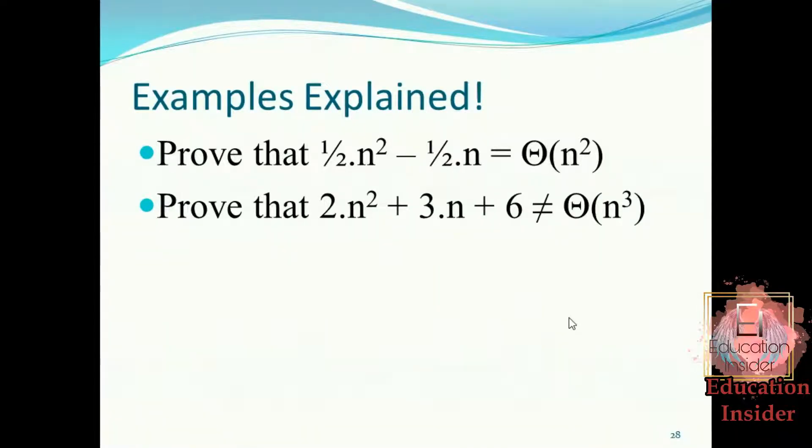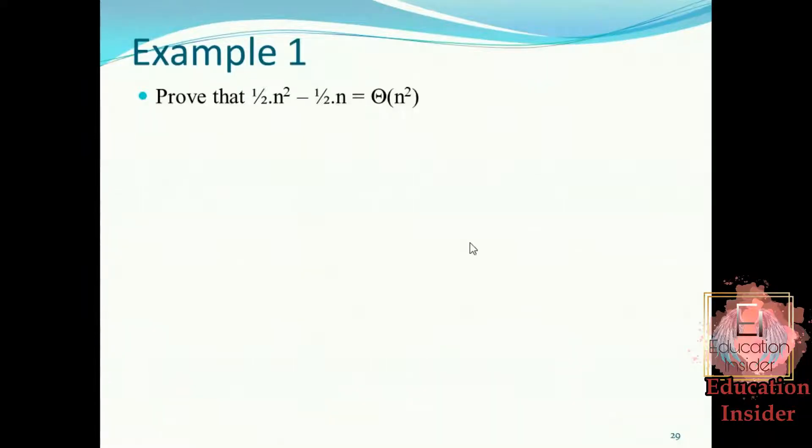Now, how will we prove two bounds? We need to assume the two inequalities at the same time, as we did in big O and big Omega, but now we have to assume both simultaneously. So now let's populate the values of f(n) and g(n) on both sides.